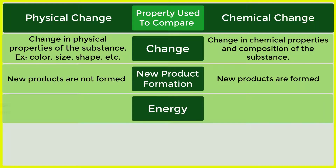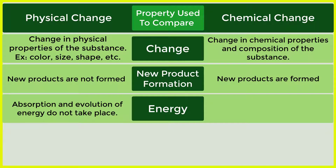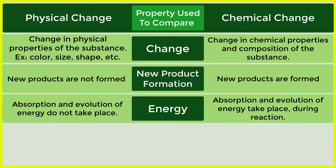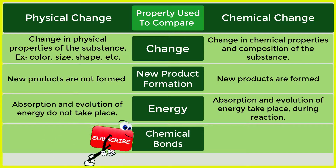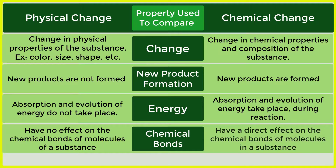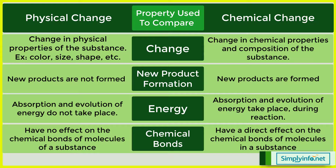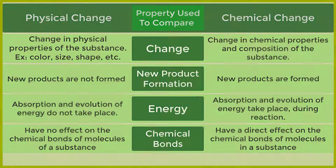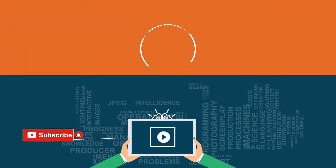Regarding energy: in a physical change, absorption and evolution of energy do not take place. In a chemical change, absorption and evolution of energy takes place during the reaction. Regarding chemical bonds: physical changes have no effect on the chemical bonds of the molecules of a substance, while chemical changes have a direct effect on the chemical bonds of the molecules in a substance.